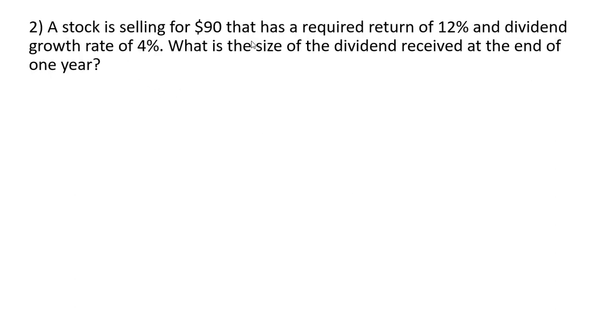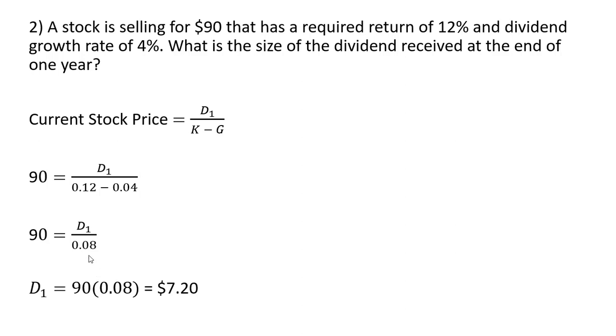Another example, a stock is selling for $90, that has a required return of 12%, and the dividend growth rate of 4%. What is the size of the dividend received at the end of one year? So here's our formula, plugging in what we know. The current stock price is $90. We don't know what the dividend is, we're going to solve for that, but we know that the required return is 12%, and the growth rate in the dividend is 4%. So simplifying the denominator, we get 0.08. Multiplying everything through by 0.08, the dividend is $7.20.